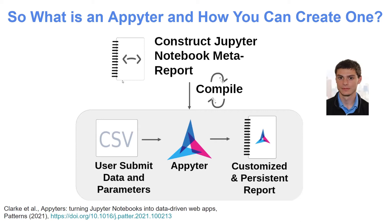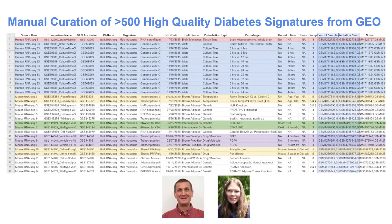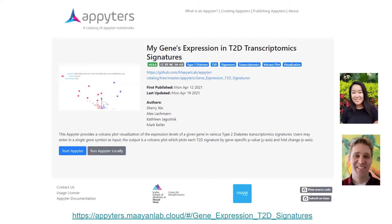A recent Apiter we developed together with the Ati Lab and Mark Keller — Mark Keller and Kathleen Jagodnik, a postdoc in my lab, and Mark is a senior scientist in the Ati Lab. They manually went to GEO and identified high-quality diabetes gene expression studies, creating a master Excel spreadsheet with over 500 to 600 rows. Most importantly, they identified the control and perturbation samples from each study. Then Alex Lackman processed those datasets to signatures, and Sherry Ji created an Apiter for that data.